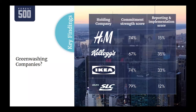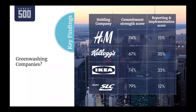This lack of transparent reporting prevents organizations from identifying the difference between real company action and greenwash. Several brands scored far less for implementation than for their commitment strength score. One interpretation of this disparity could be that companies are greenwashing — they seem to have policies and commitments in place but are not implementing them on the ground. Without increased transparency, it is impossible to differentiate between companies that are greenwashing and those merely failing to disclose their progress.